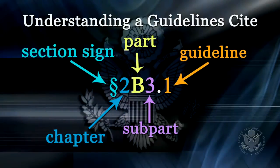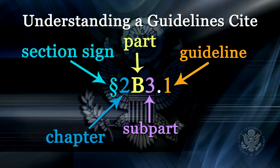It is also important to understand the structure of a guideline. Each guideline in the manual, regardless of the chapter in which it's located, is cited in a particular way and contains specific parts. As you can see on this graphic, this is the proper citation for a guideline. This guideline is Section 2B3.1, which happens to be the guideline for robbery. The first number refers to the chapter, the letter refers to the part of the chapter, the next number — in this case 3 — refers to the subpart, and the final number after the point is the guideline itself. This citation therefore refers to the first guideline in Chapter 2, Part B, Subpart 3.